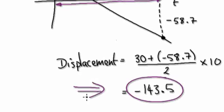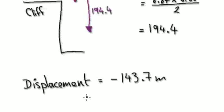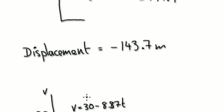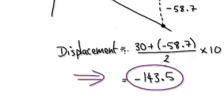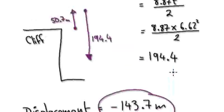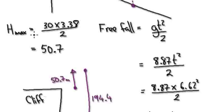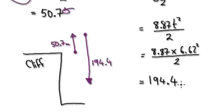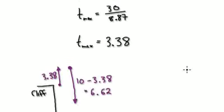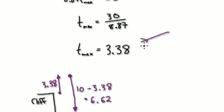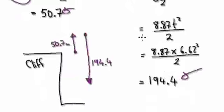This is a more accurate answer than our previous method. Our previous method gave a displacement of negative 143.7, while this method gives negative 143.5 — a slight difference. That's because when we calculated H_max and T_max, we rounded off at several steps, so there's a lot of rounding error accumulated.